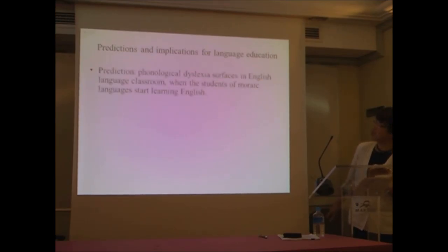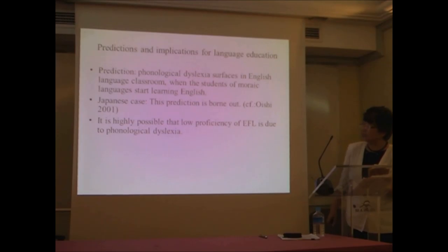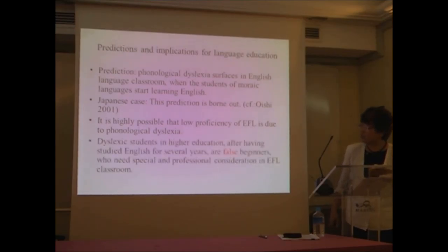Projection of the implications for language education is the following. In Japanese, phonological dyslexia surfaces at a certain point of people's life, and that is when they have to learn English. So in English language classroom, phonological dyslexia surfaces. In the Japanese case, this prediction is really important. It is highly possible that the low proficiency of EFL is due to phonological dyslexia. Dyslexic students in higher education, after having studied English for several years, they still cannot process English. They are false beginners who need special and personal consideration in EFL classroom.